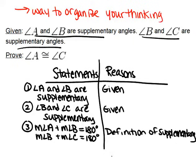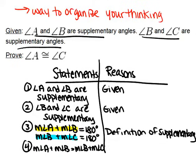Now we have two different things — the measure of angle A plus angle B, and the measure of angle B plus angle C — which both equal 180 degrees. That means we can use the substitution property to combine those two equations together, saying that the measure of angle A plus the measure of angle B equals the measure of angle B plus the measure of angle C. The reason is the substitution property of equality.